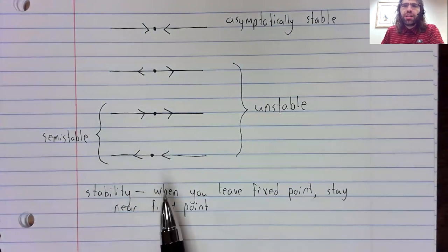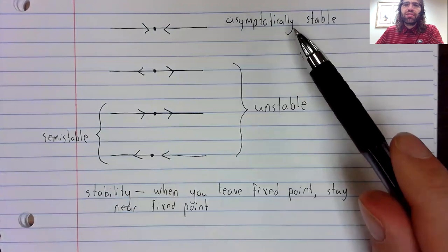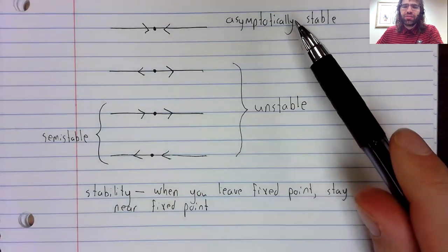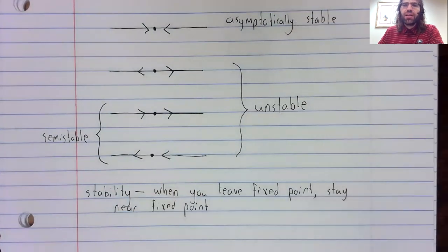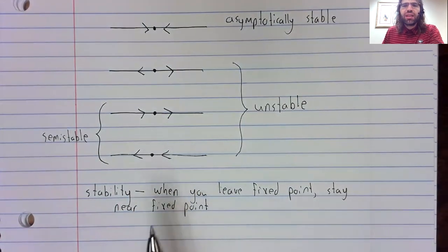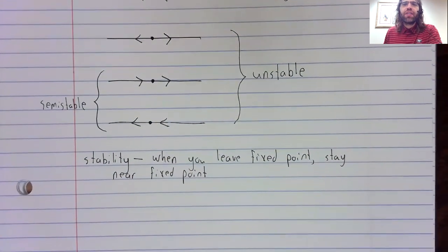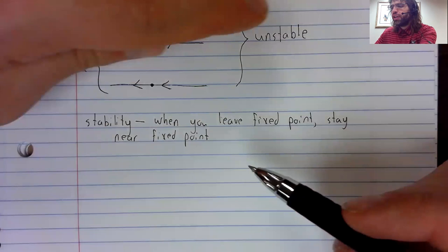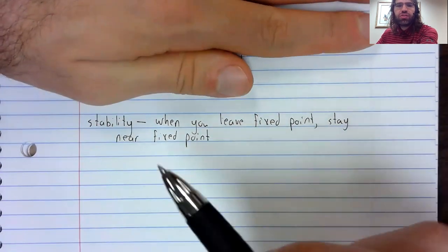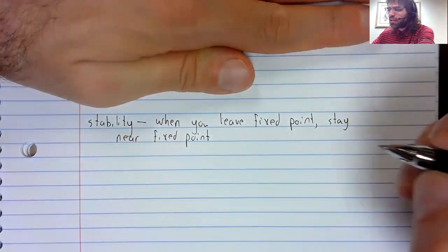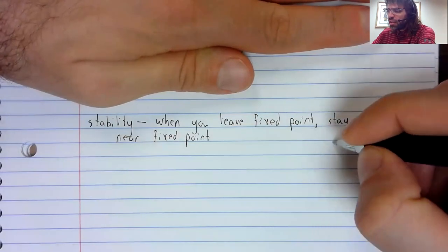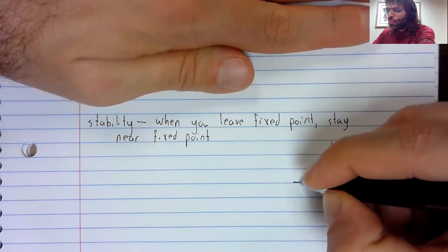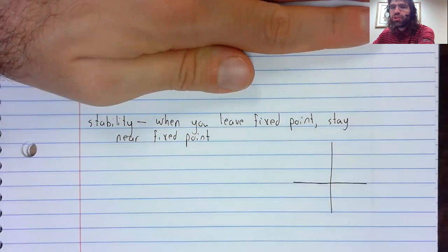And you don't really see stability without asymptotic stability in the case that we're looking at, which is why I presented it last and kind of as an afterthought. Where you rarely see just stability, not asymptotic stability, is when you're looking at motion in the plane.